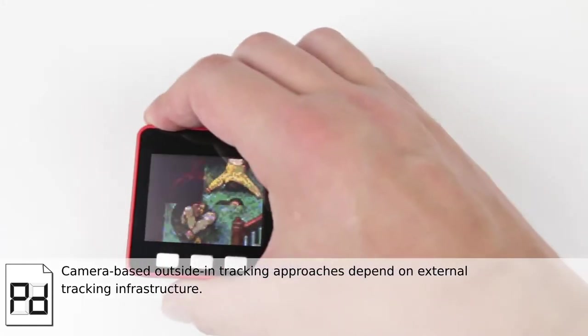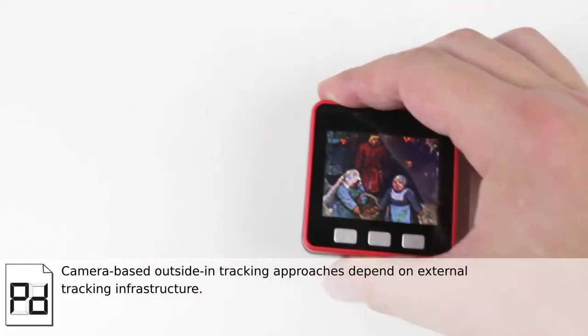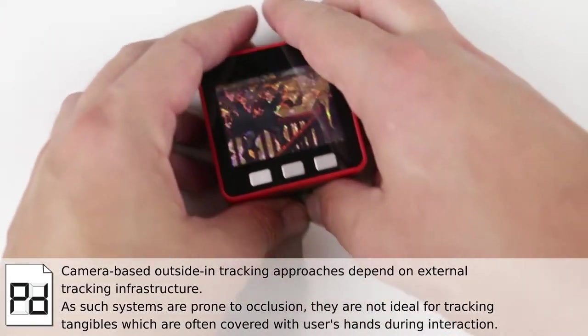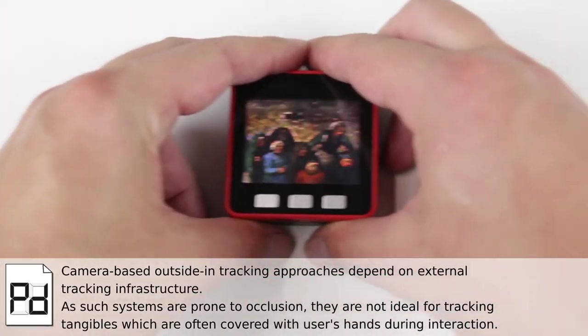Camera-based outside-in tracking approaches depend on external tracking infrastructure. As such systems are prone to occlusion, they are not ideal for tracking tangibles,